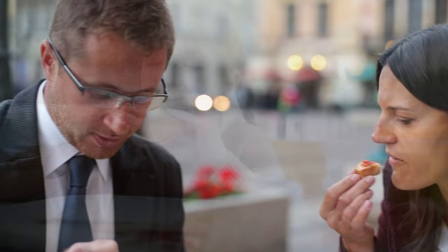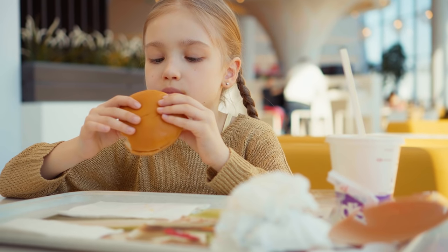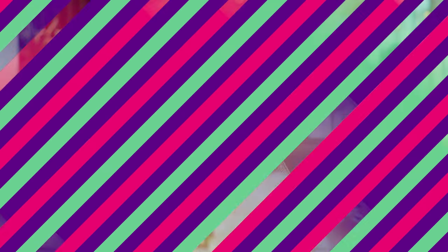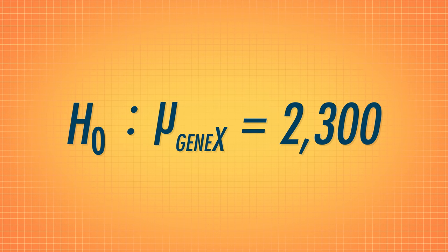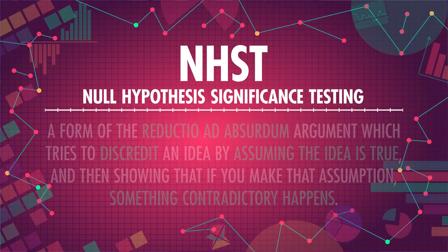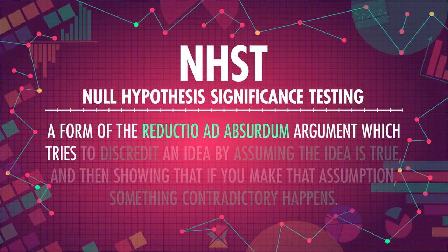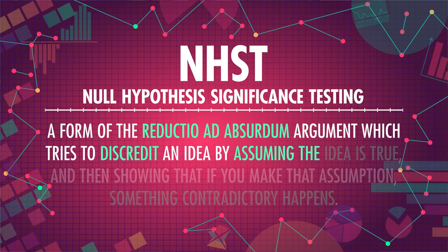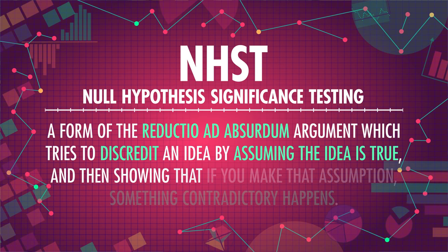In this case, the null hypothesis, or null model, is that the population mean caloric intake for people with GeneX is actually 2300 calories — the same as the regular population. If the null hypothesis is found to be infeasible, we can reject it. This might seem like a roundabout way to test your theory, and that's because it is. Null hypothesis significance testing is a form of reductio ad absurdum, which tries to discredit an idea by assuming the idea is true and then showing that something contradictory happens.